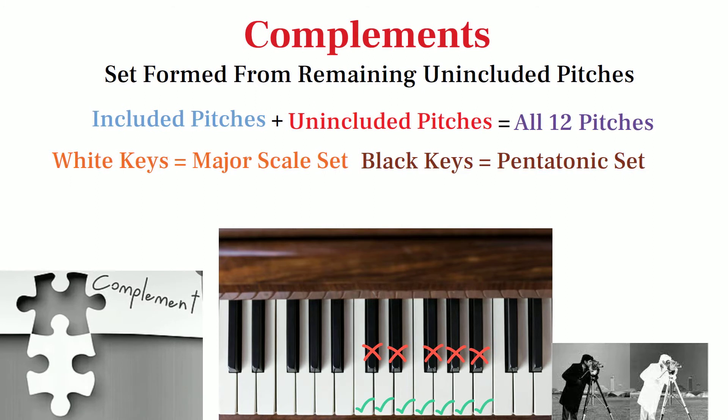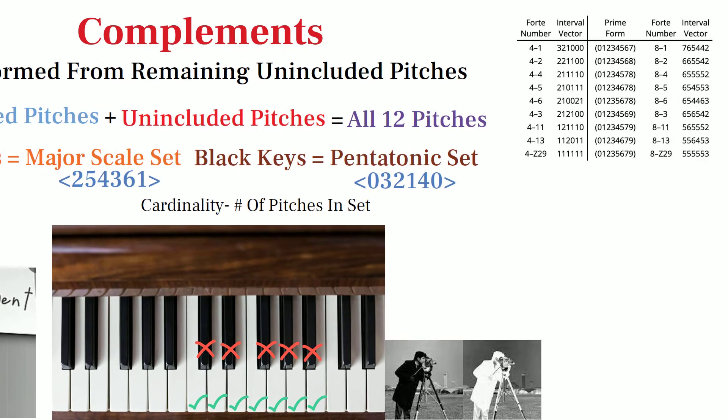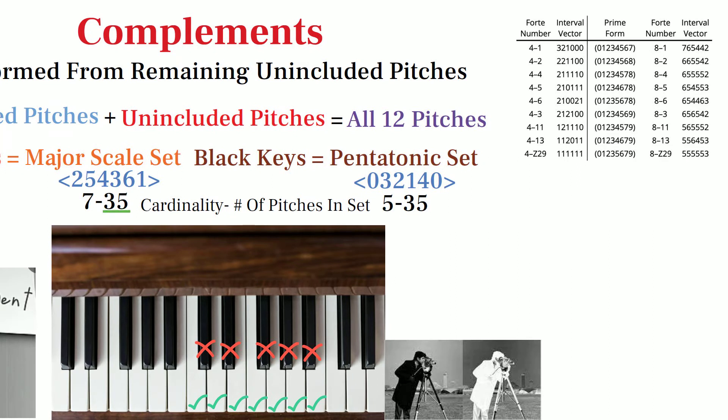As we can see in this example, complementary sets bear a rough resemblance to each other, especially in terms of interval content, yet they have different cardinalities. You will sometimes see Fort charts list sets like 7-35 adjacent to their complement set 5-35, and as we can see, complementary sets always have the same rank number.